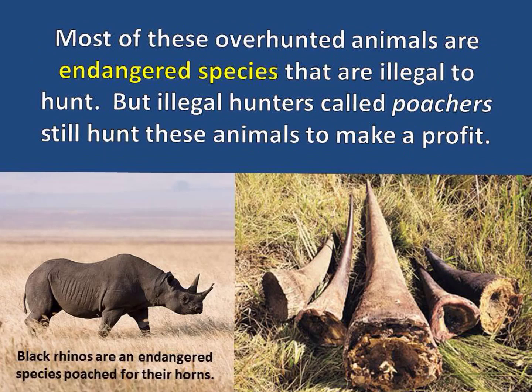Most of these over-hunted animals are endangered species that are illegal to hunt, but illegal hunters called poachers still hunt these animals to make a profit. The black rhinoceros is an endangered species that's poached for its horn, which can be sold on the black market for a high profit.